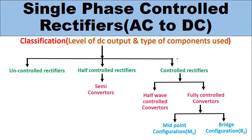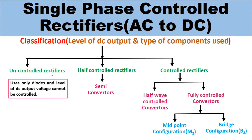We have studied the classification of single phase controlled rectifiers, which are also called AC to DC converters, in the previous classes. In this lecture we are going to see the classification of single phase controlled rectifiers or AC to DC converters according to the level of DC output and type of components used. According to these criteria, single phase controlled rectifiers are classified into three categories: first is uncontrolled rectifiers, second is half controlled rectifiers, and third is controlled rectifiers.